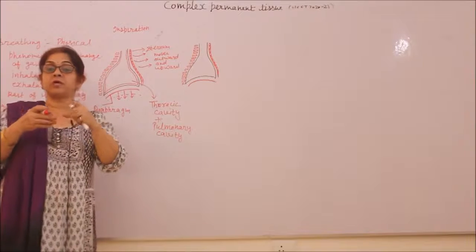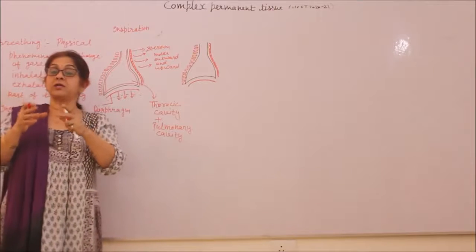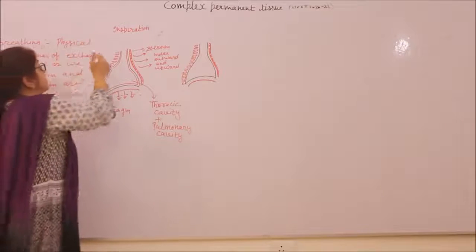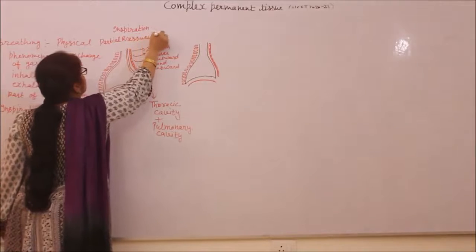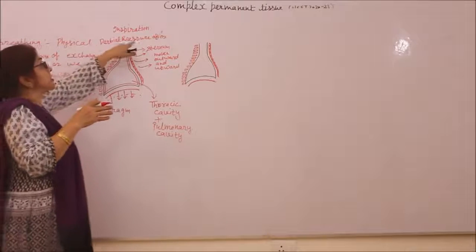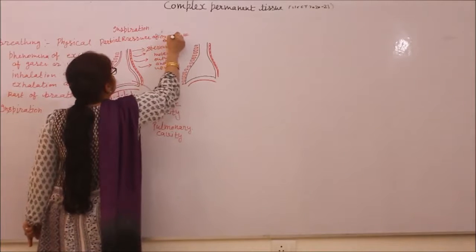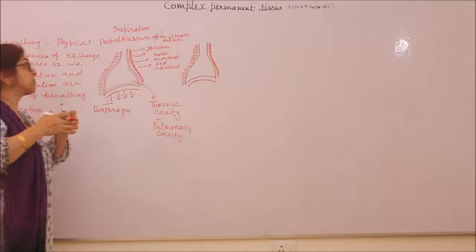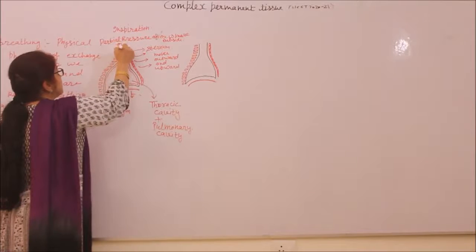We have to consider the partial pressure of oxygen. Air is a mixture of gases, and we consider the pressure of oxygen specifically — the partial pressure of oxygen. The partial pressure of oxygen is more on the outside compared to the inside, because the thoracic and pulmonary cavities are enlarged, making intra-pulmonary volume maximum and pressure of air less inside. So air — oxygen at higher pressure — will move inside.